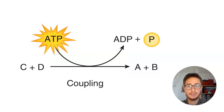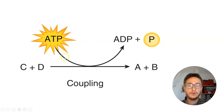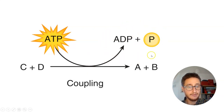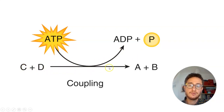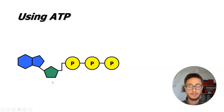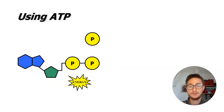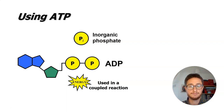We start with a molecule of ATP, then break off a phosphate from the molecule, leaving us with ADP — adenosine diphosphate — and an inorganic phosphate molecule. The energy released in that reaction is what allows the reaction we want to proceed. This releases about 31 kilojoules per mole, which doesn't seem like a lot, but it's enough to get a very small reaction going at the level of a cell membrane or an enzyme-substrate complex.